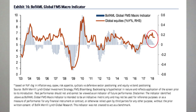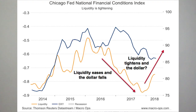We're seeing the start of global tightening in indicators across the board. This chart is the global FMS macro indicator from Bank of America. It's gone from bullish to neutral territory. Tightening global liquidity leads to rising perceptions of risk, and higher risk perception typically leads to a stronger dollar because it catches the flight-to-safety bid. And because the dollar and gold trade inversely to one another, that is bearish for gold.